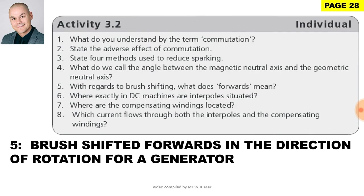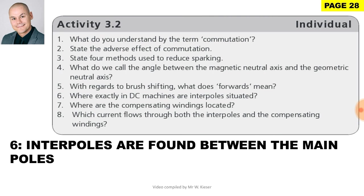Question 5: With regards to brush shifting, what does forwards mean? A brush will be shifted forwards in the direction of rotation for a generator. Question 6: Where exactly in DC machines are interpoles situated? Interpoles are found between the main poles.